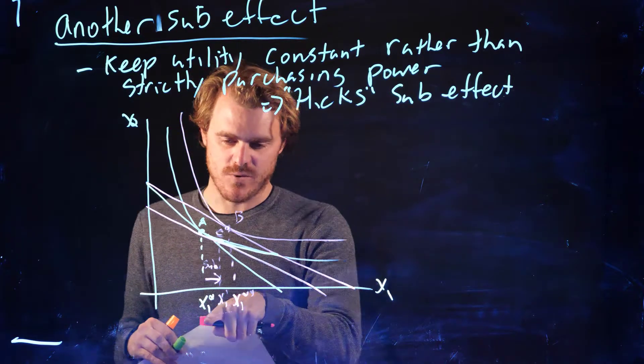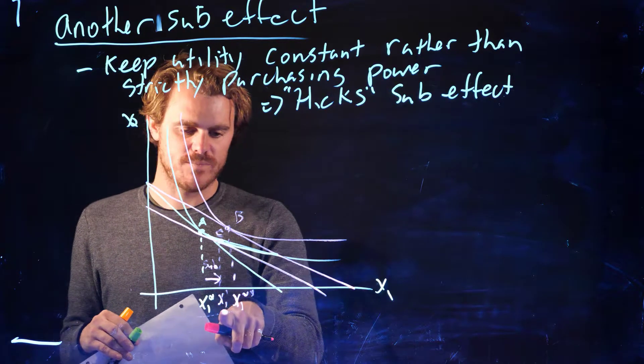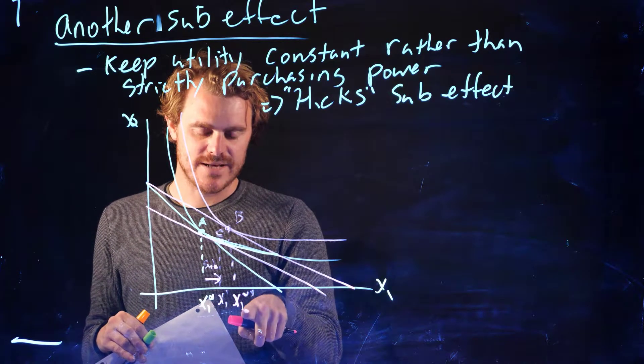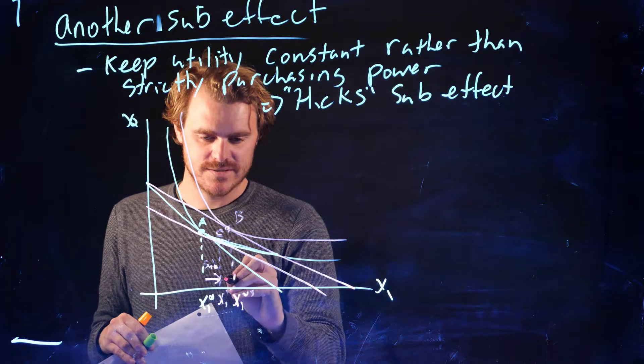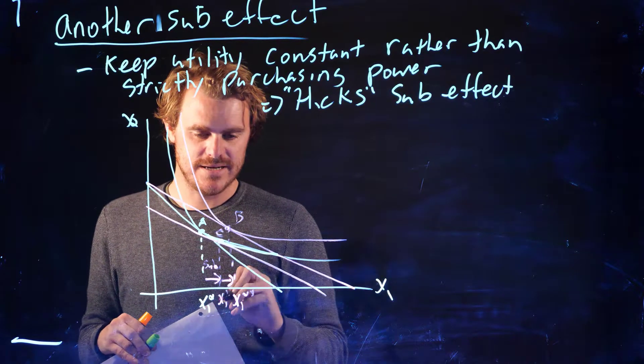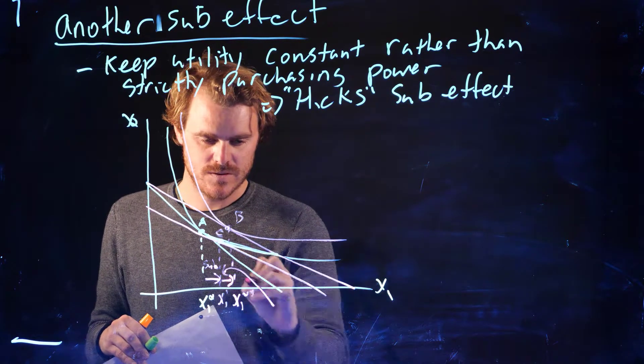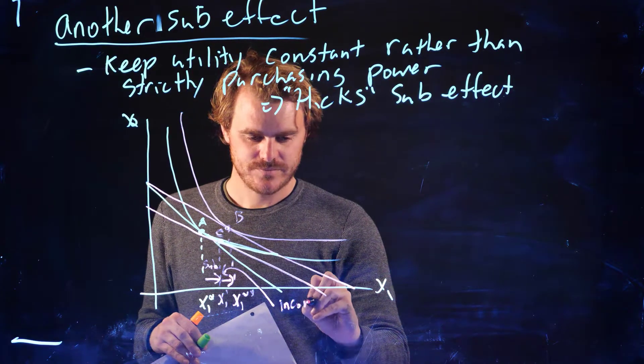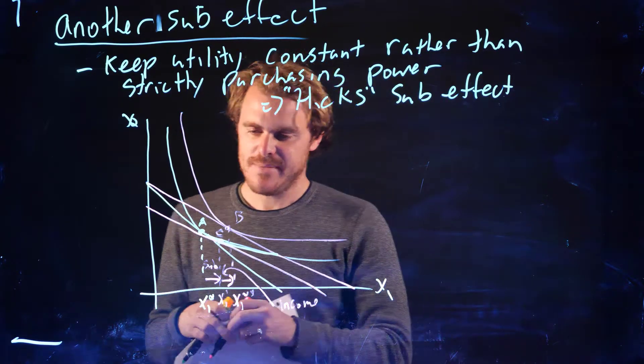Just like before, x1 star to x1 prime. And the rest of it is the income effect. So this part is the income effect. So it's the same idea here,